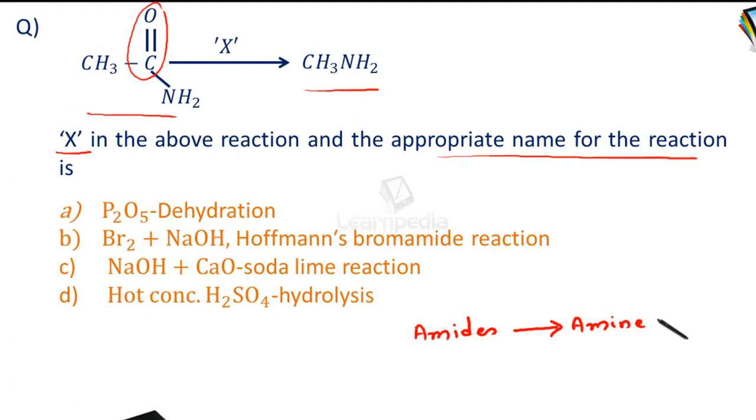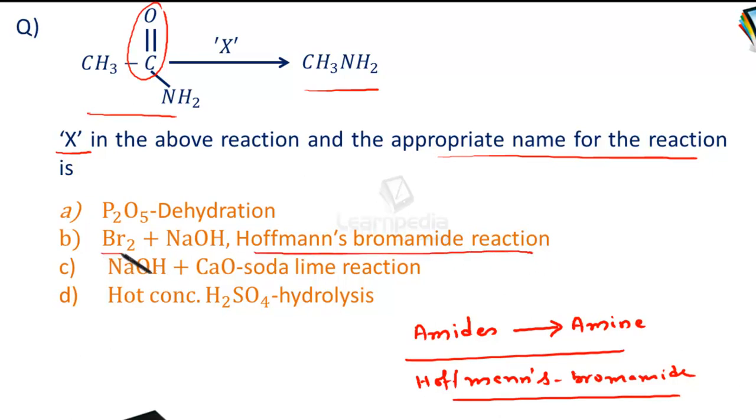One of the methods for this conversion is Hoffmann's bromamide reaction. This reaction is carried out using bromine in the presence of NaOH. Therefore, the answer is option B: Br2 + NaOH, Hoffmann's bromamide reaction.